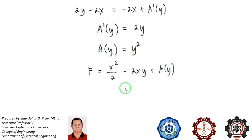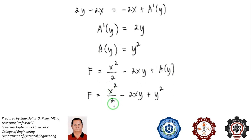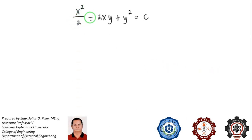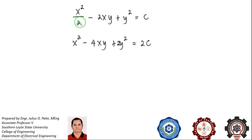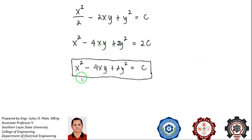Now that we have a of y, we substitute it back into f. So f equals x squared over 2 minus 2xy plus y squared, and setting f equal to c then multiplying through gives us x squared minus 4xy plus 2y squared equals c. This is our general solution to the exact differential equation.